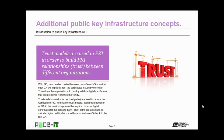Trust models are used in PKI in order to build PKI relationships between different organizations. With PKI, trust can be created between two different certificate authorities so that each CA will implicitly trust the certificates issued by the other. This allows organizations to quickly validate digital certificates received from the other entity. Trust models, also known as trust paths, are used to reduce the workload on PKI. Without trust models, each PKI implementation would be required to issue digital certificates for the opposite party. Trust paths are also used to validate digital certificates issued by a subordinate CA back to the root certificate authority.